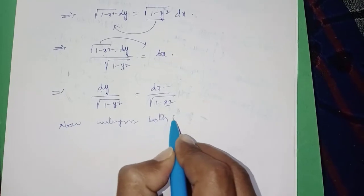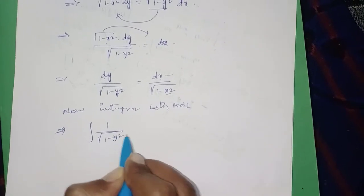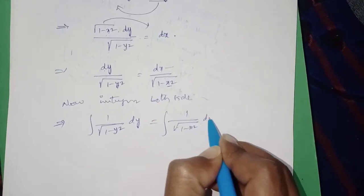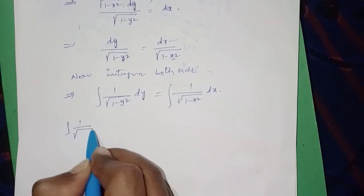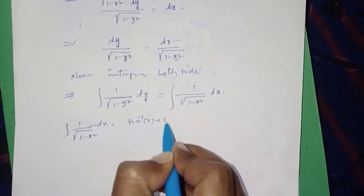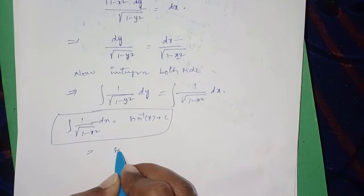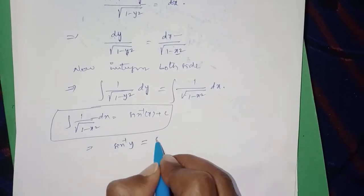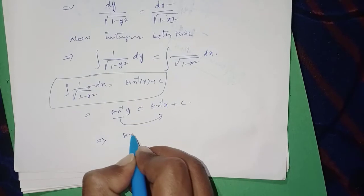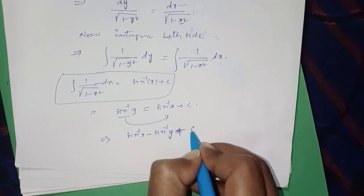Integrate both sides: integral of 1 upon under root (1 minus y square) dy equals integral of 1 upon under root (1 minus x square) dx. Using the formula — integral of 1 upon under root (1 minus x square) dx equals sin inverse x plus c — substitute accordingly: sin inverse y equals sin inverse x plus c, which gives sin inverse x minus sin inverse y plus c equals 0.